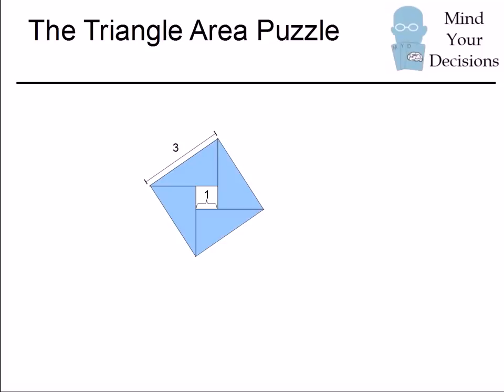Now we've noticed something neat. We basically have a big square, which has a side 3, and we have the four triangles, and we have the small square.